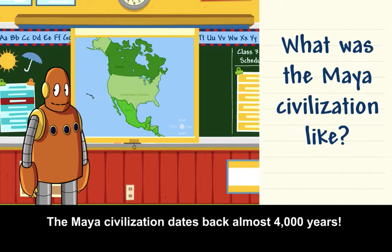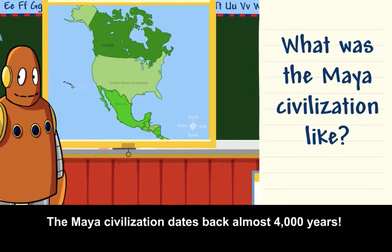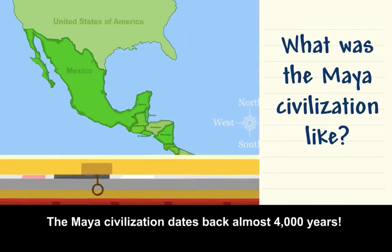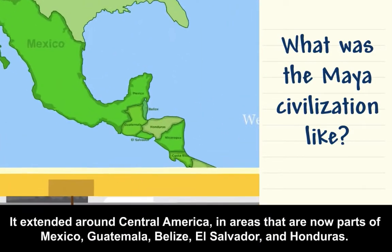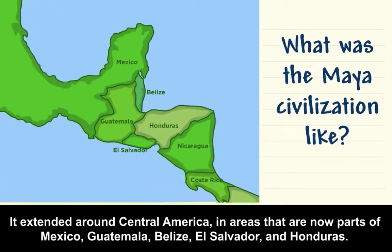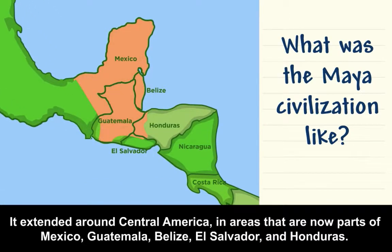What was the Maya civilization like? The Maya civilization dates back almost 4,000 years. It extended around Central America and areas that are now parts of Mexico, Guatemala, Belize, El Salvador, and Honduras.